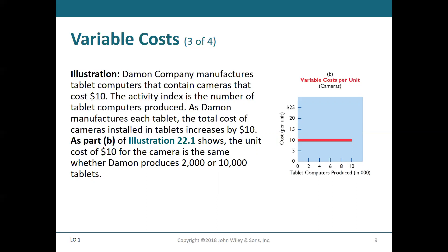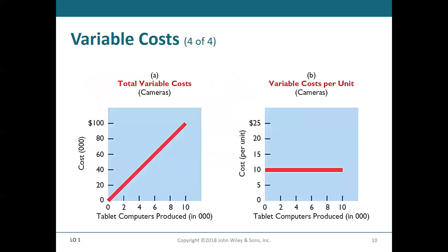The cost per unit is flat — it stays the same regardless of how many units we are producing. Our total variable costs go up in a straight measurable line, while the variable cost per unit stays flat. So to summarize variable costs: the total dollar costs increase proportionally, while the cost per unit remains constant.